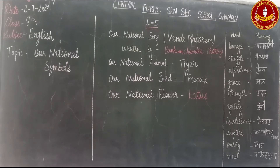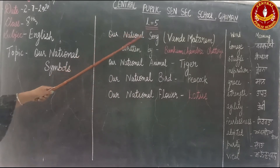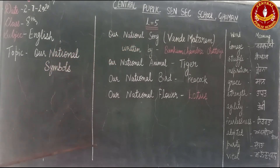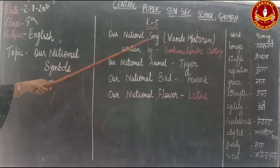Good morning students. As you know, we are doing lesson number five: Our National Symbols. Please open your books at page number 40. We will start from the second last paragraph of page number 40.